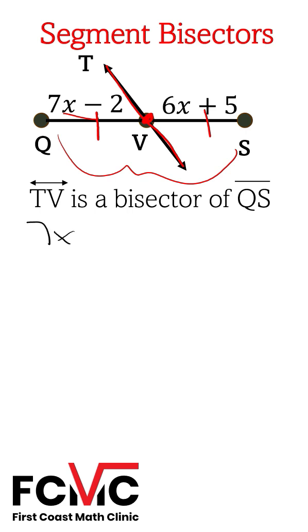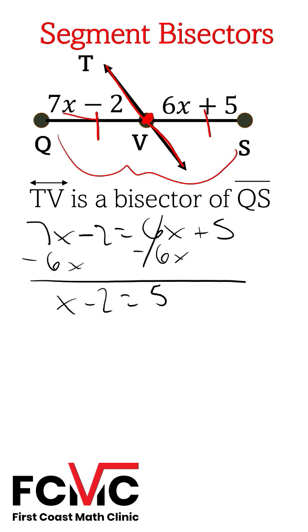We can start by setting up the equation. 7x minus 2 equals 6x plus 5. Let's solve this for x. Subtract 6x from both sides. You get x equals 7.